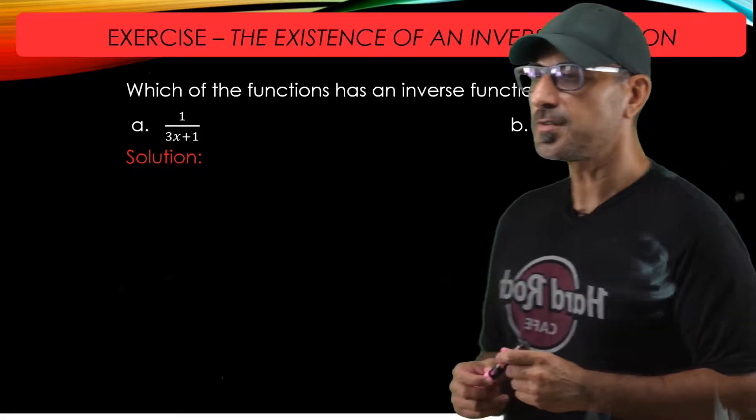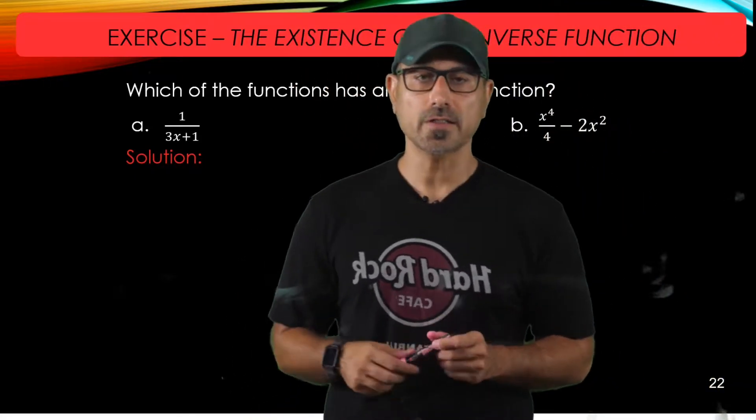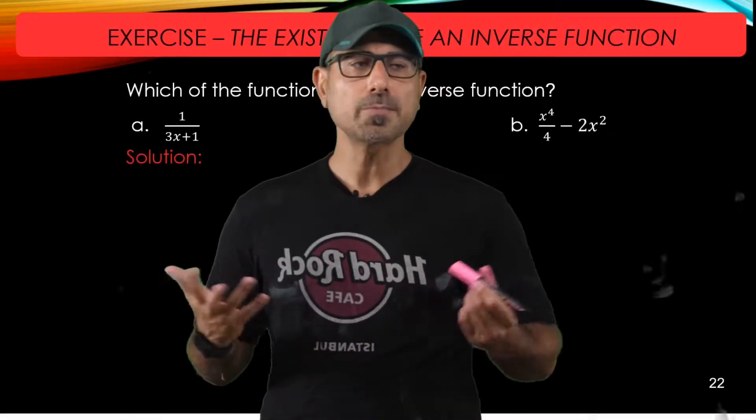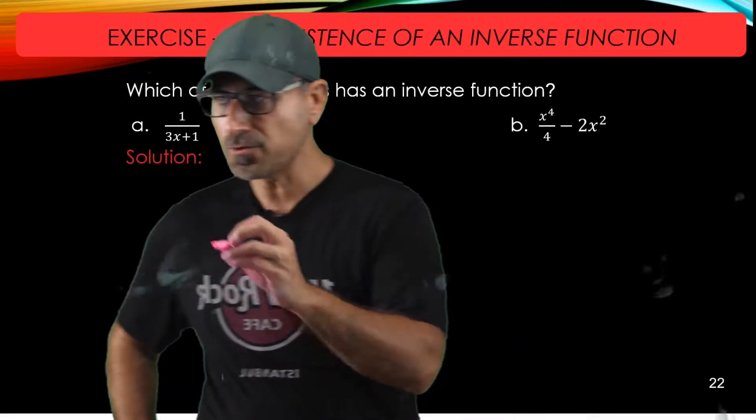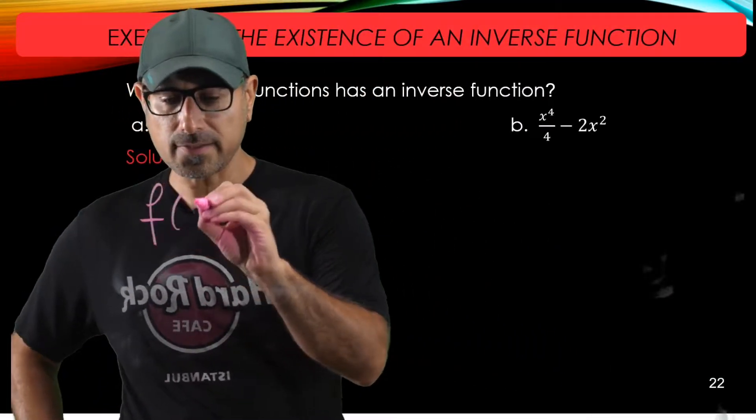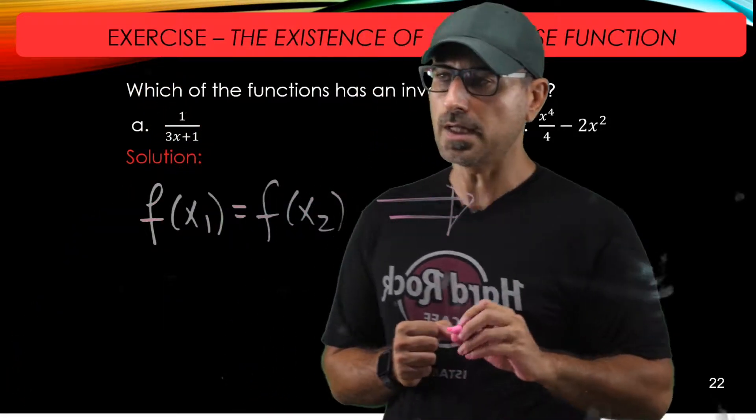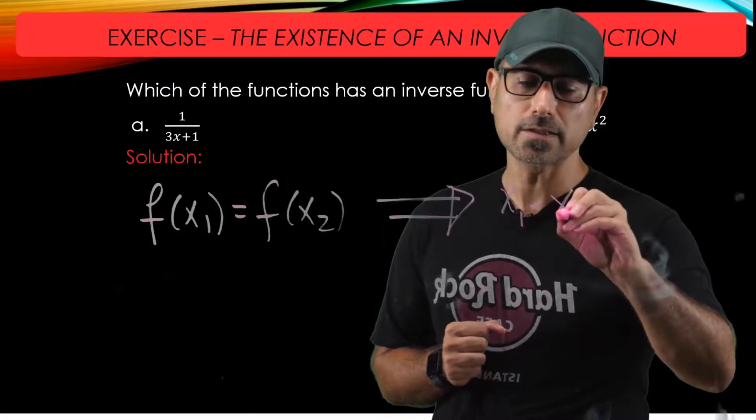For the existence of an inverse function, the only thing that we check is the one-to-one property of the function. Algebraically, what that means is that if your function has this equality true, f(x1) = f(x2), that should imply that x1 equals x2.